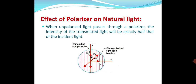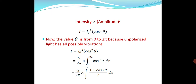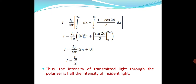When unpolarized light passes through a polarizer, the intensity of transmitted light will be exactly half that of the incident light. The intensity I = E²cos²θ. Since intensity is directly proportional to amplitude squared, I = I₀cos²θ. At the output we get I₀/2 — that is, half of the intensity. Thus, the intensity of transmitted light through the polarizer is half the intensity of incident light.